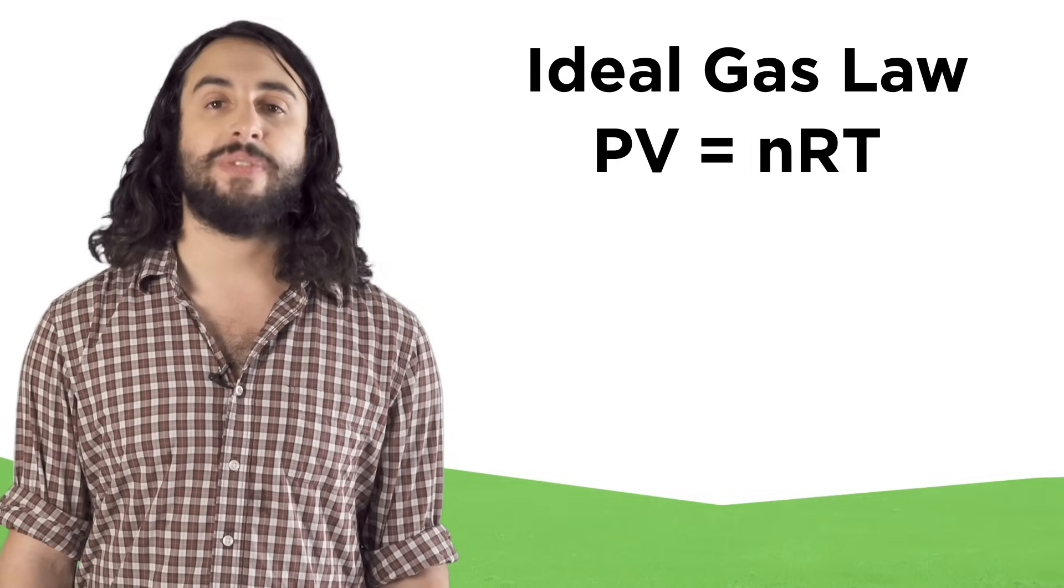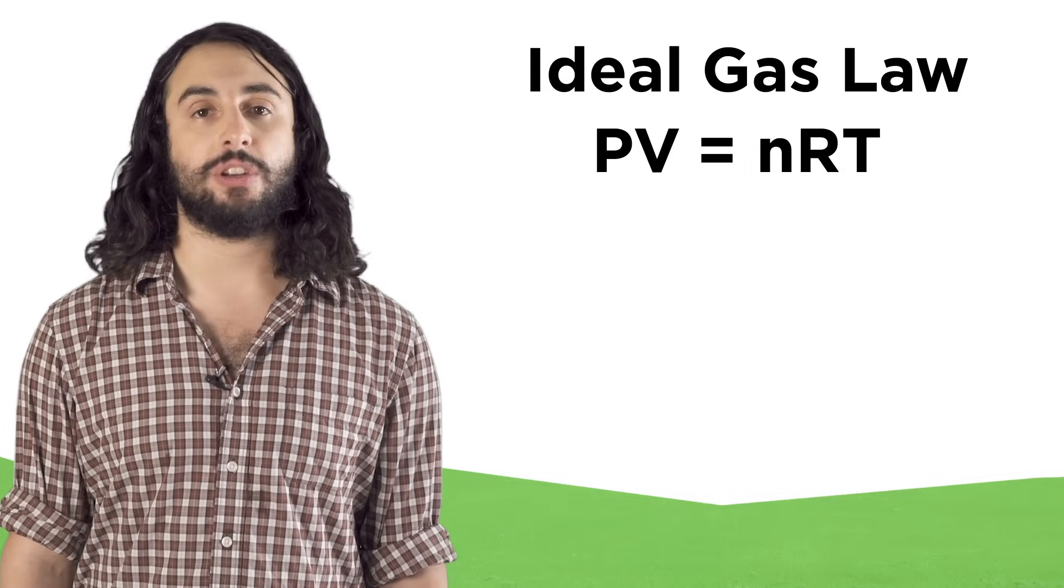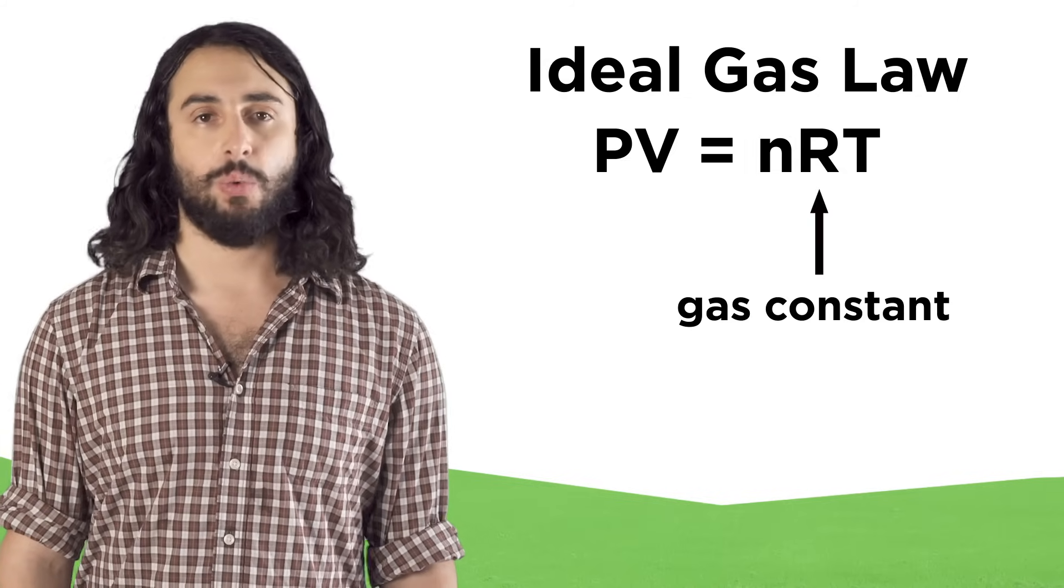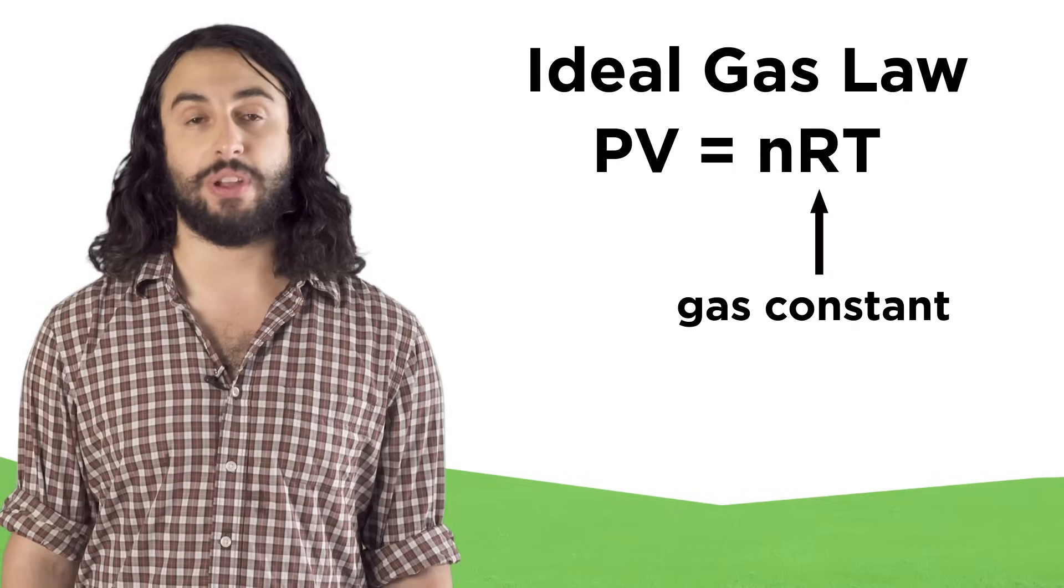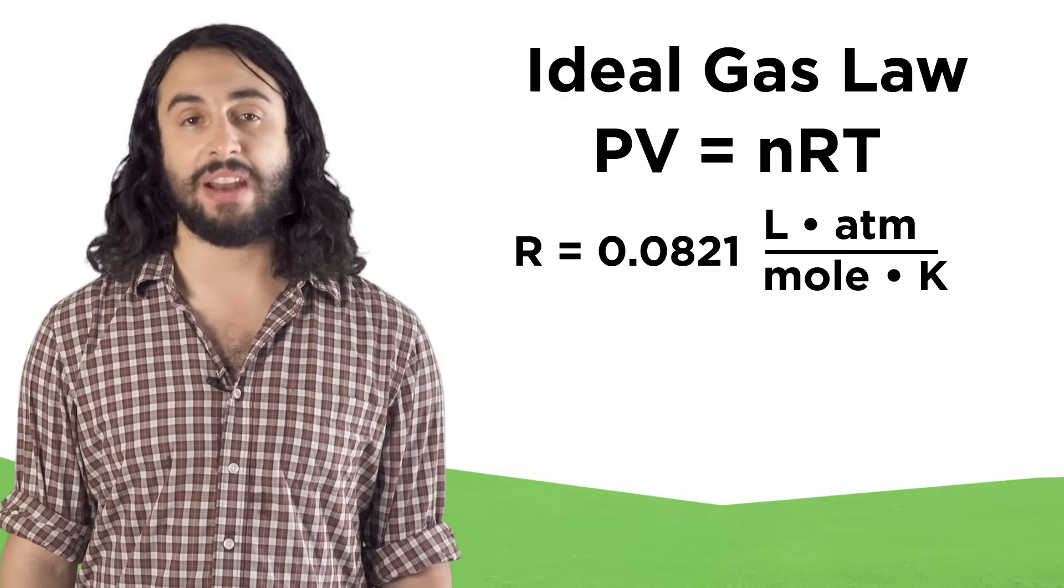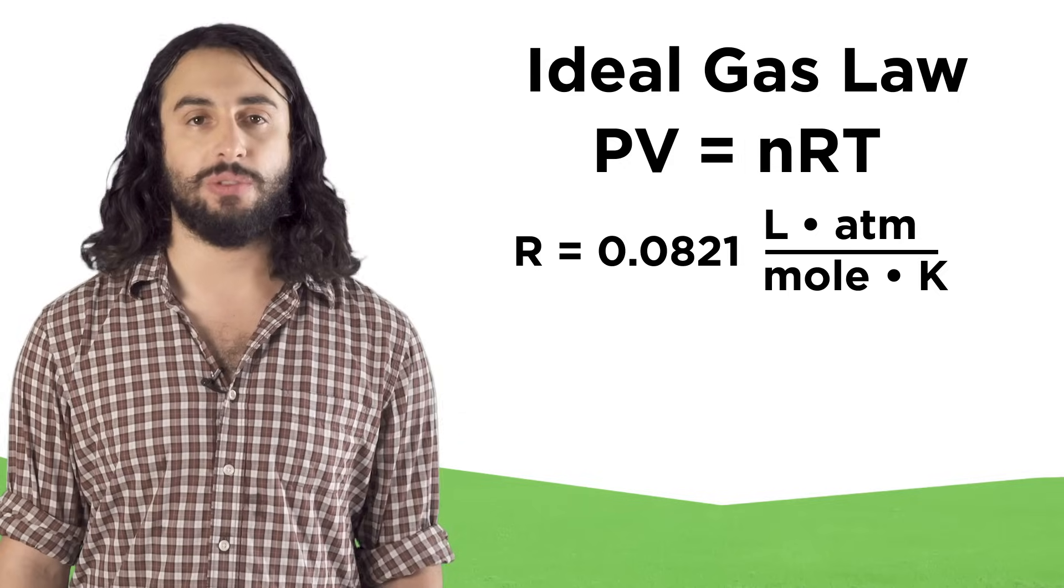Lastly, all the variables correlate in one equation called the ideal gas law. This also contains the gas constant R, which makes these calculations intelligible in our man-made units. There are a number of values for R depending on the units, but we will predominantly use this one.